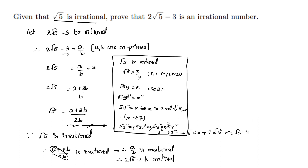So therefore our assumption is wrong. Root 5 is not rational — it is irrational. Therefore, root 5 is irrational.